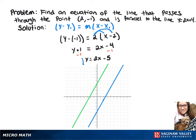So that'll be our blue line on the graph, and it's parallel to y equals 2x plus 4, which is our green line on the graph.